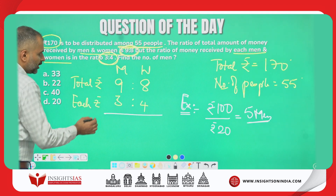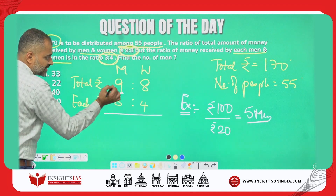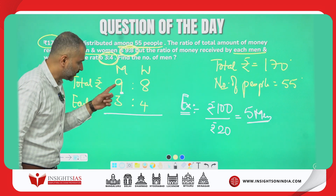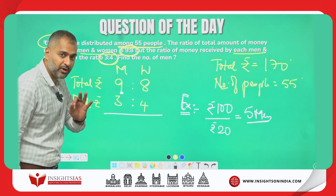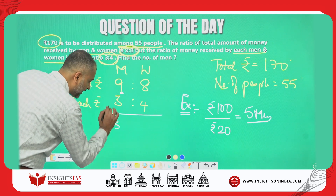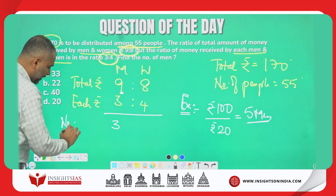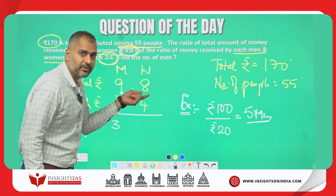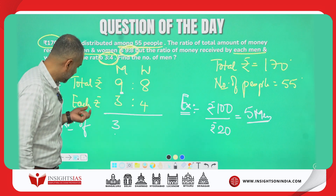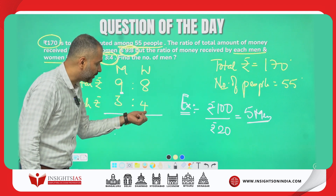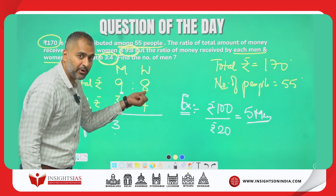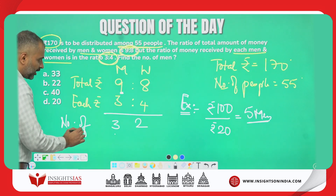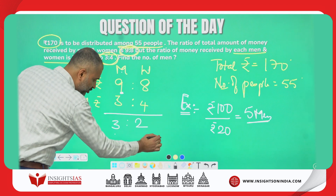Consider total money received by all the men is 9 parts. If each person is receiving 3 rupees, and 9 rupees is the total — then how many men must be there? 3 men. So the number of men is 3 parts. Similarly, all the women are getting 8 parts, and if each woman is getting 4, then how many women are there? 2 women. So the number of men and women are in the ratio 3 is to 2.